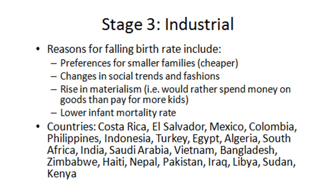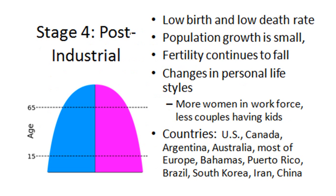Stage four is where you see zero population growth — low birth rate and low death rate. Fertility rates keep falling and can go below replacement level. This is often due to lifestyle changes: more women in the workforce, women choosing to delay childbearing in favor of education and career advancement, so they start having children later and have fewer total. Many European countries are in this category, as well as the United States, Canada, Argentina, Australia, the Bahamas, Brazil, South Korea, Iran, and China.